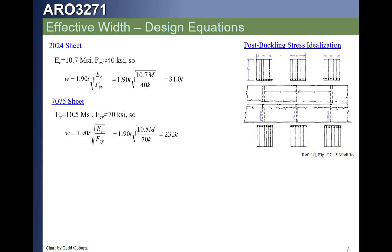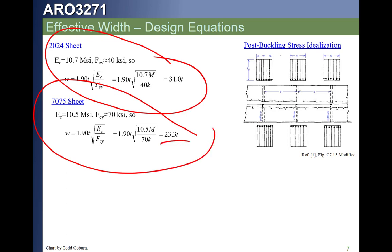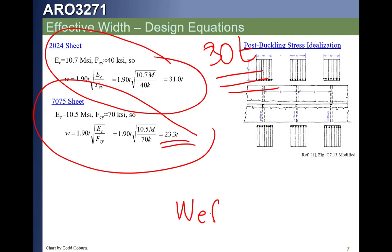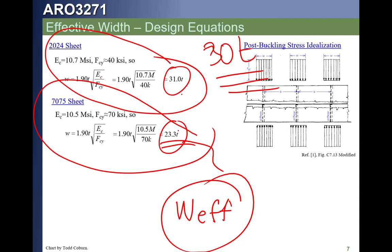For 7075 sheet, plugging in its modulus and compressive yield gives 23t. So when you hear folks say 'effective width of 30t,' you should be thinking: do you have 2024 skin? That's a nice approximation for 2024, but for 7075 skin 23t would be better. A lot of people in industry ignore this and just use 30t — you need to be aware of that and its limitations. In this class, if asked to calculate effective width, we will calculate it exactly for our material.